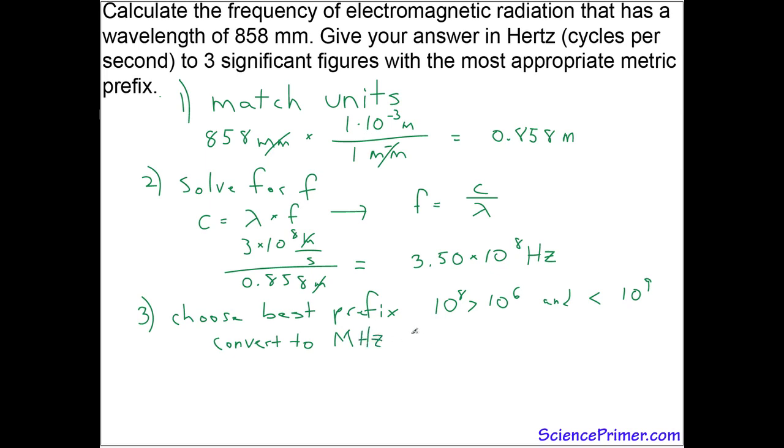Follow the same pattern from step one. Start with the number we have, 3.50 times ten to the eighth hertz. Multiply by the conversion factor, one megahertz divided by one times ten to the sixth hertz. The hertz are going to cancel, and we'll end up with 350 megahertz as the final answer.